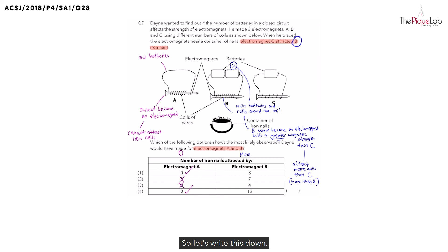Looking at options 1 and 4, can you tell me which option shows that electromagnet B attracted more than 8 iron nails? It must have been option 4. Therefore, the only possible answer is going to be option 4.